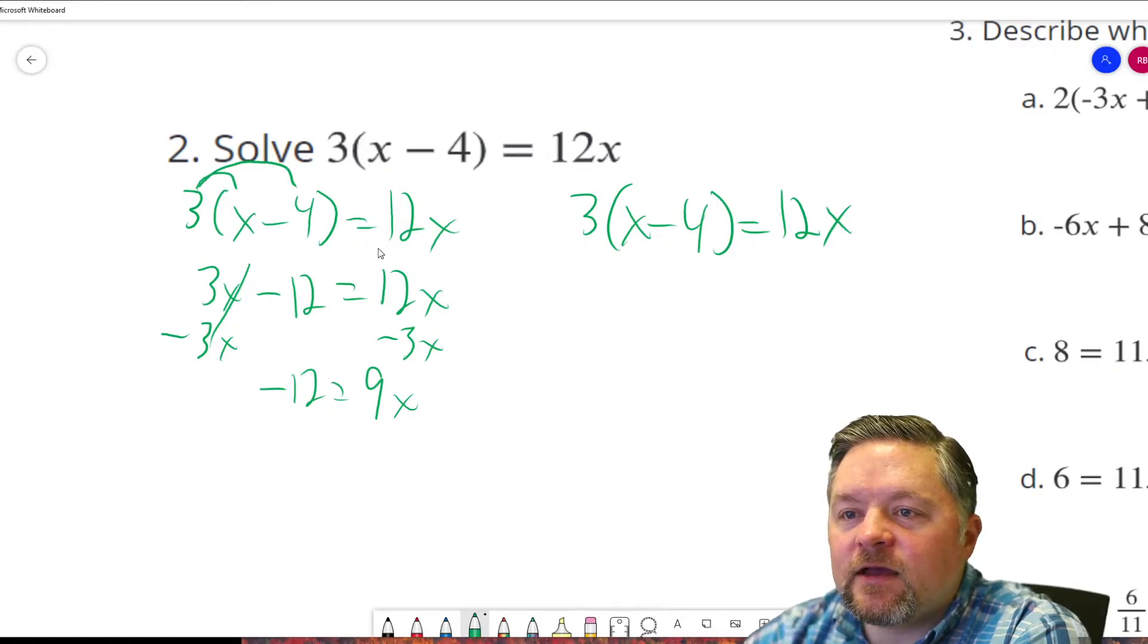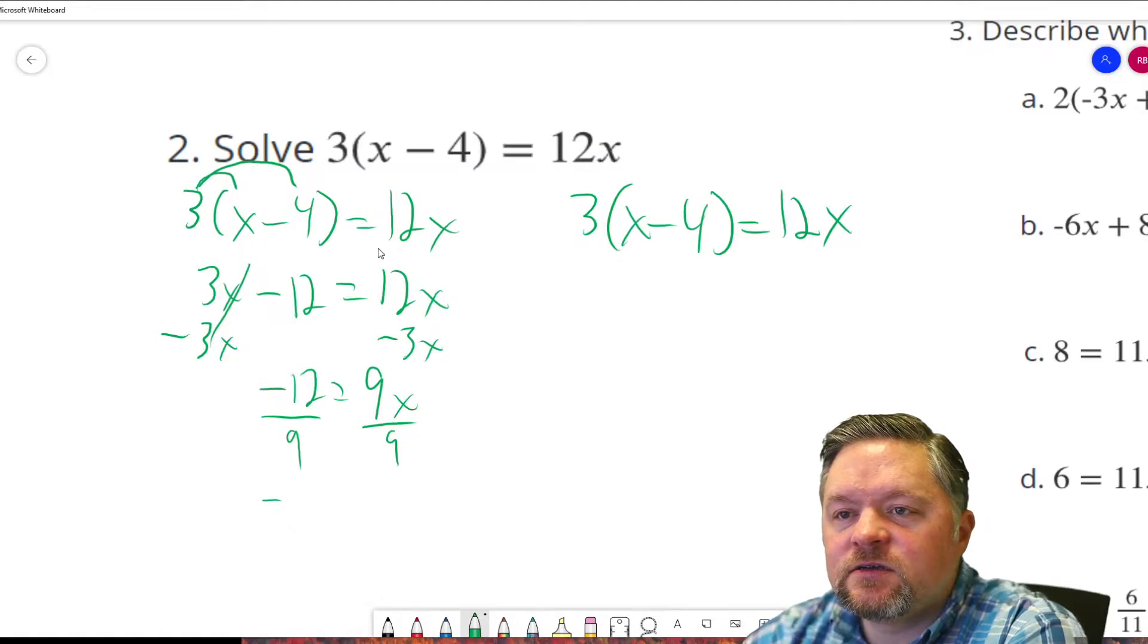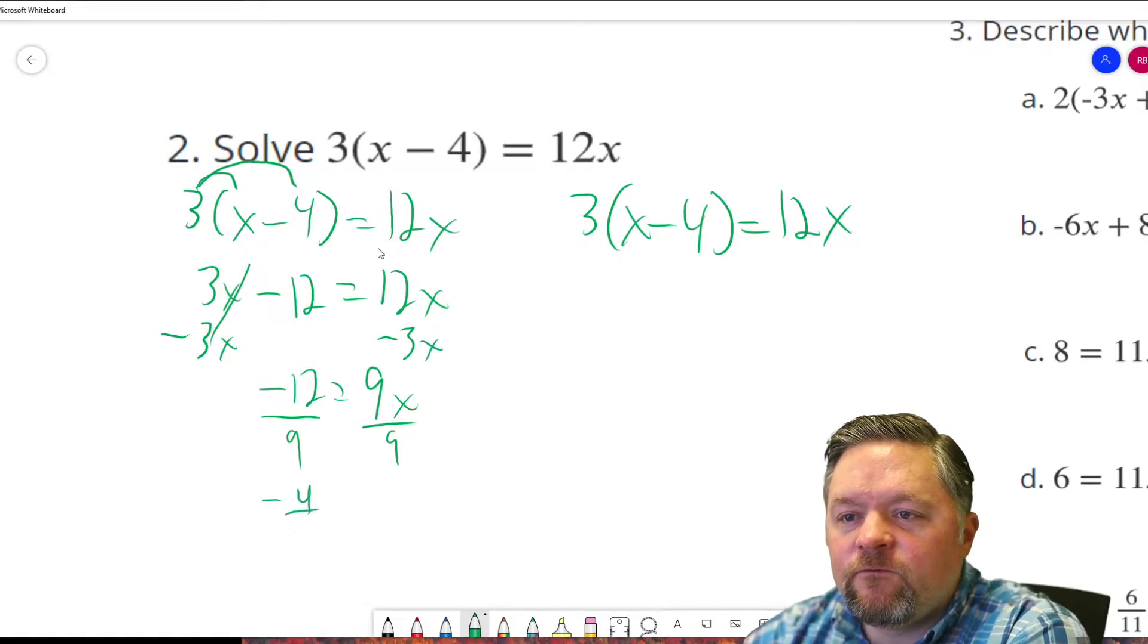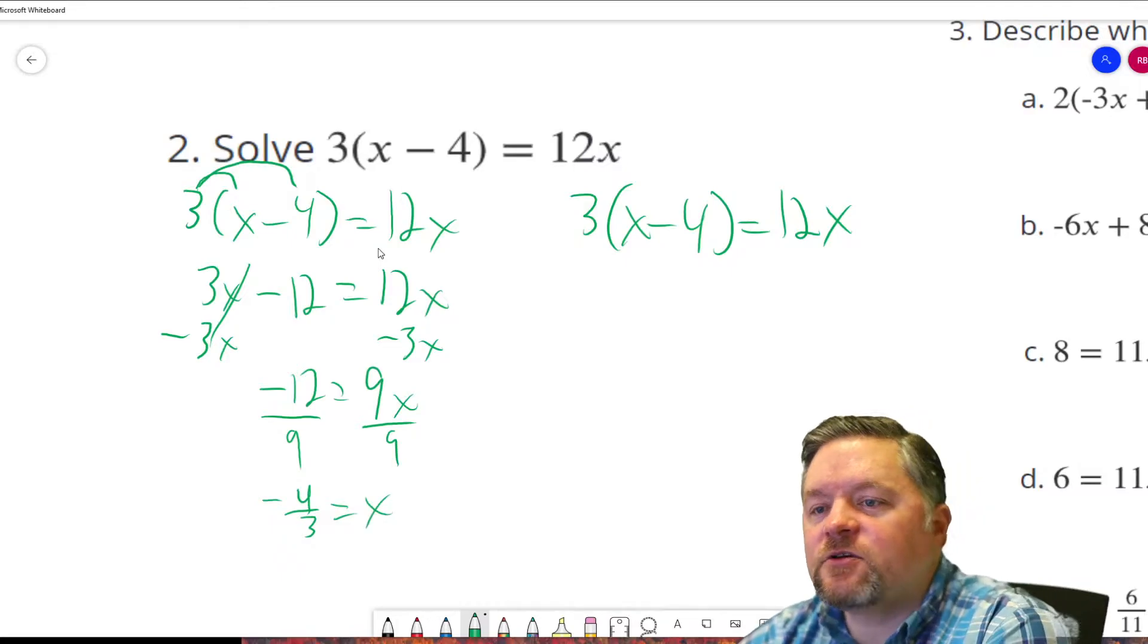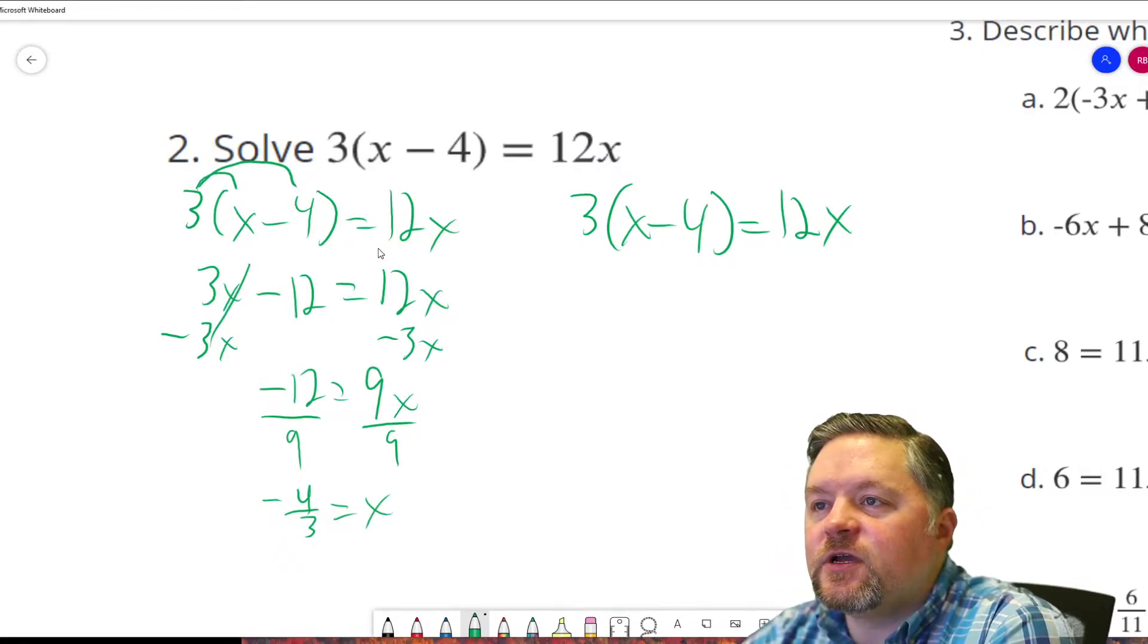Now we have to divide each side by 9. And we have negative 12 9ths, which is 4 3rds equals x. So x equals negative 4 3rds. What else can we do here?